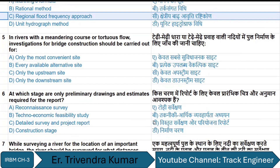Question number five: in rivers with meandering courses or tortuous flows, investigation for bridge construction should be carried out for every available alternate site. Options included only the most convenient site, every available alternate site, only the upstream site, and only the downstream site.